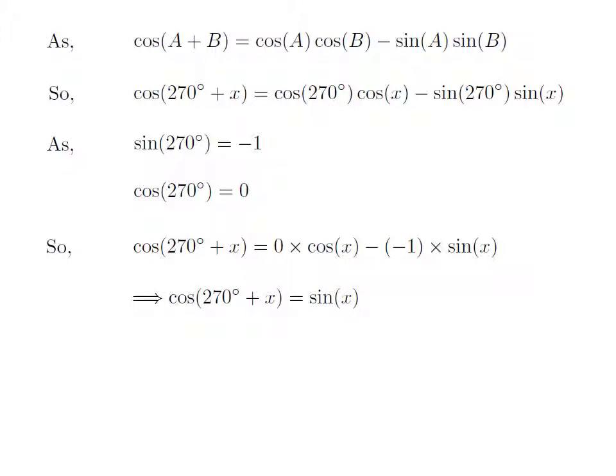So, the value of cosine of 270 degrees plus x is equal to sine of x.